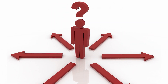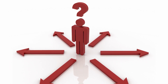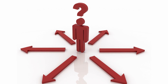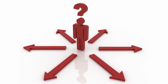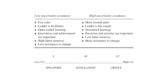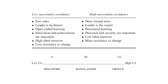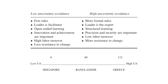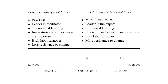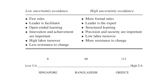The fourth dimension, uncertainty avoidance, looks at the extent to which a society feels comfortable with ambiguity, risk, and uncertainty. Societies with high uncertainty avoidance tend to have rigid rules, formal structures, and a preference for avoiding uncertainty — for example, venturing off to start your own business. Societies with low uncertainty avoidance, however, are more tolerant of change and ambiguity.